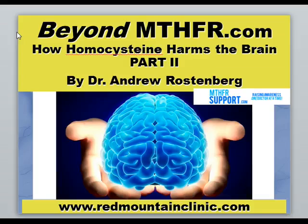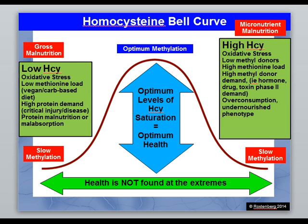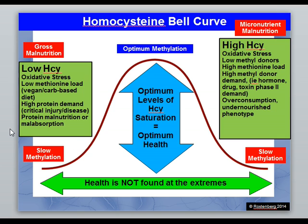We're going to pick up where we left off last time and touch on the homocysteine bell curve, which is a graphical representation of where we want to be. Our goal is to be in the optimum methylation area — between four and eight on a blood test. A few people watching will have low homocysteine, below four, which is more of a frank protein malnutrition state — slow methylation simply because there's not enough methionine or protein coming in. For the rest of the video, we're focusing on patients with high homocysteine levels.